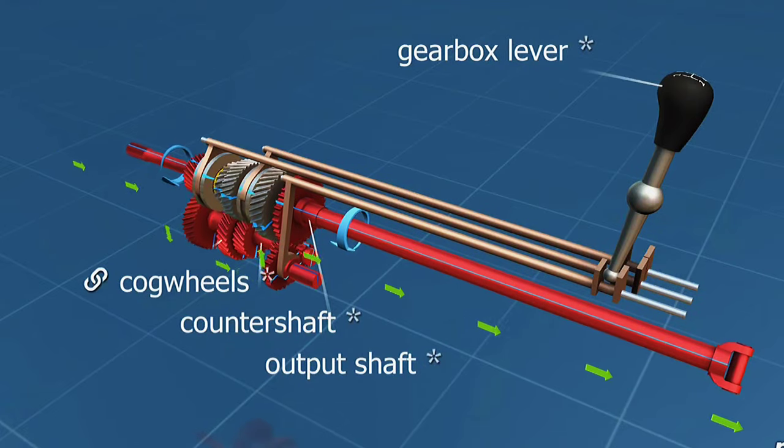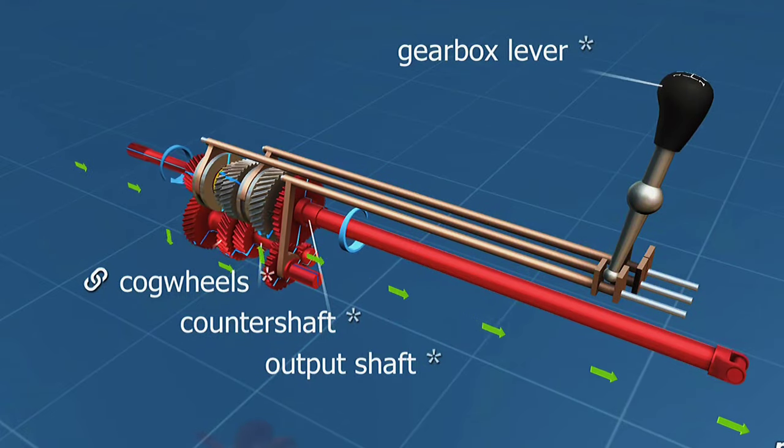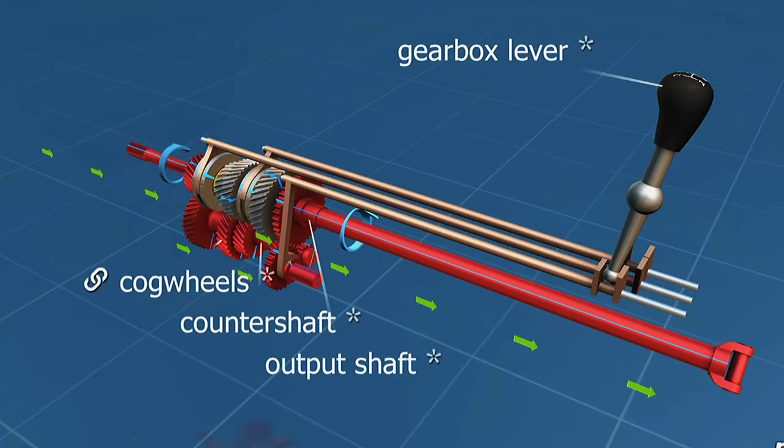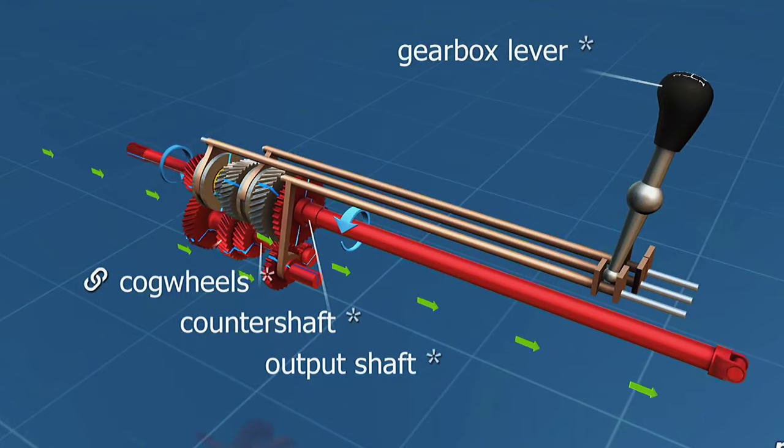In lower gear, the car is slower but pulls harder. In higher gear, the vehicle is faster and uses less fuel but has weaker acceleration.